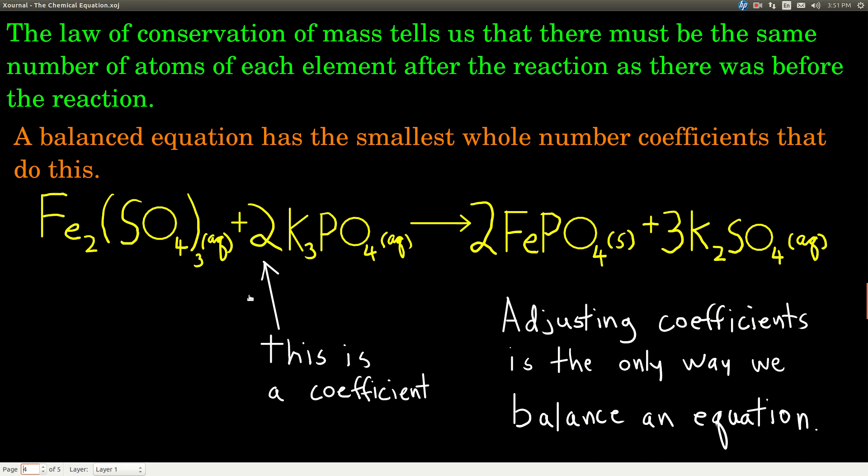The law of conservation of mass, well, it says that matter can be neither created nor destroyed, and the way we apply that in chemistry is in a chemical equation that describes a chemical reaction, if matter can neither be created nor destroyed, then that means that however many atoms of a given element we have on the left-hand side of the arrow, we must have that same number of atoms on the right-hand side of the arrow.